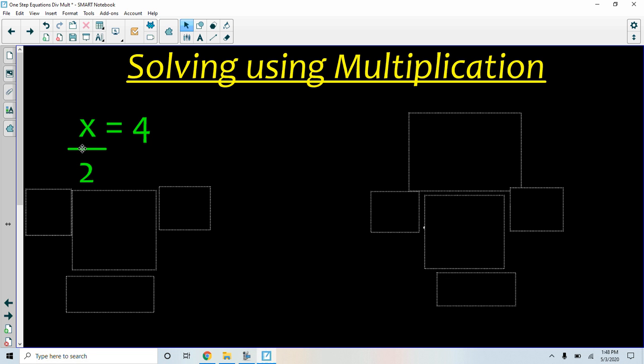The opposite of dividing by 2 is multiplying by 2, so I'm going to multiply both sides by 2. I'm just going to rewrite that equation first, and then I'm going to show that I'm multiplying by 2. I use parentheses to show multiplication.